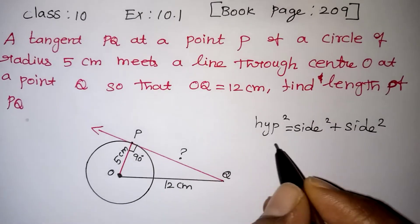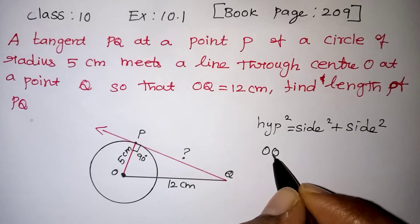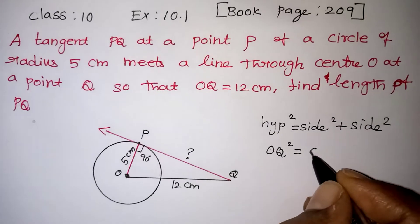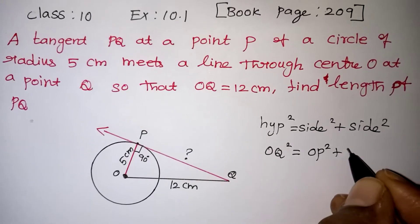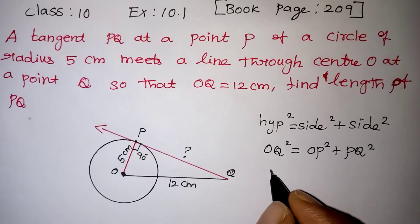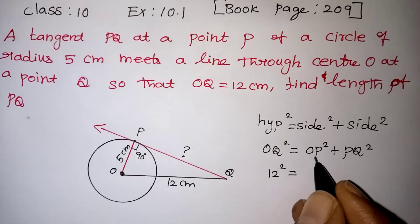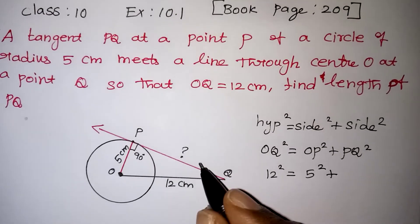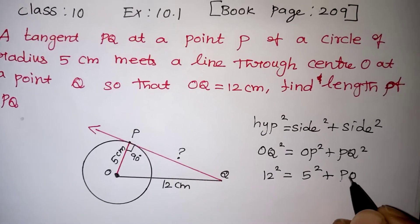Now here hypotenuse is OQ. So OQ squared equals the remaining two sides OP and PQ. So one is OP squared, the other is PQ squared. Now OQ value is given as 12, so 12 squared equals OP value is given as 5, so 5 squared plus PQ value we don't know. So keep PQ as it is.